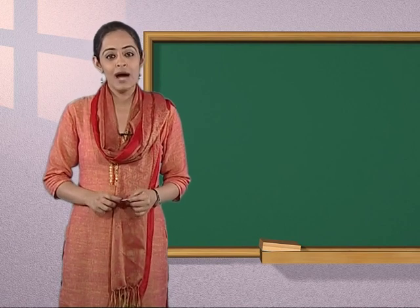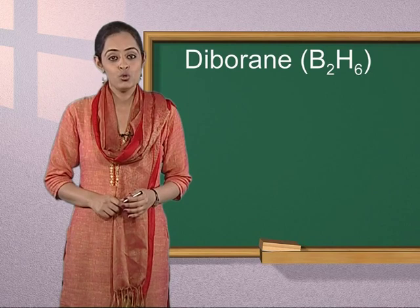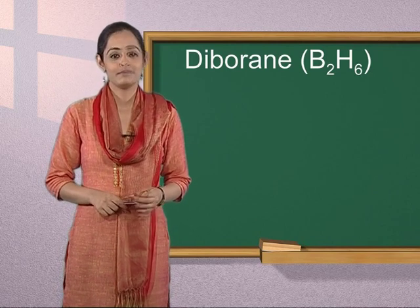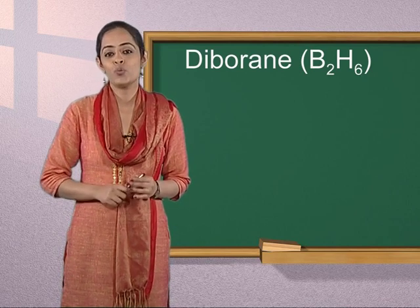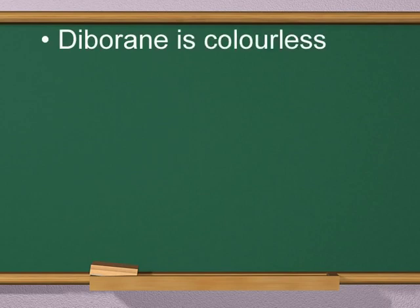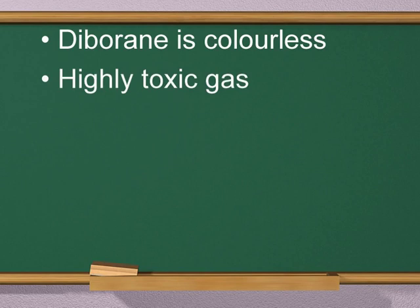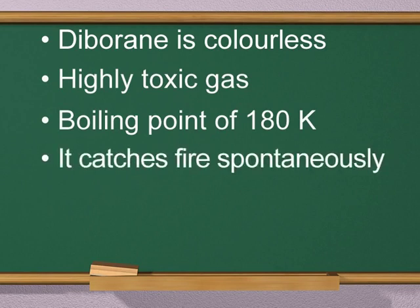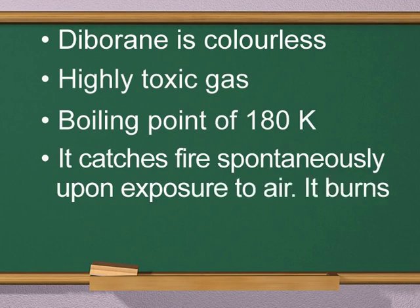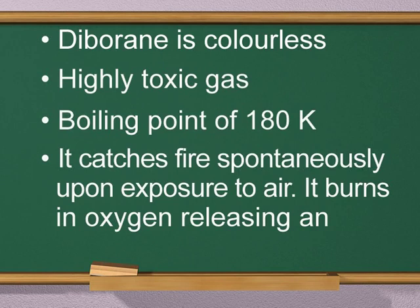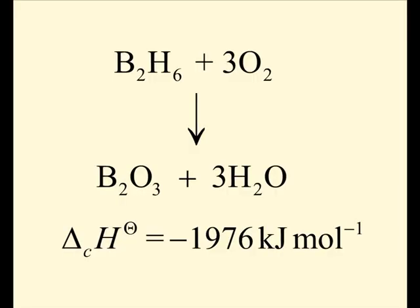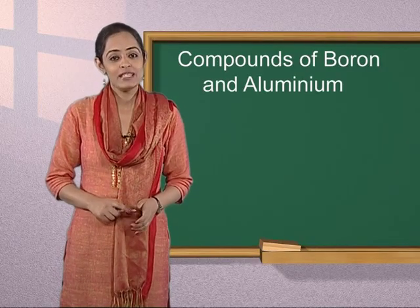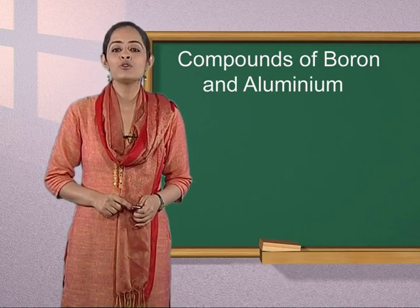Let us first discuss diborane, that is B2H6, and its preparation. Diborane is the simplest boron hydride known. Diborane is a colorless, highly toxic gas with a boiling point of 180 Kelvin. It catches fire spontaneously upon exposure to air. It burns in oxygen, releasing an enormous amount of energy.